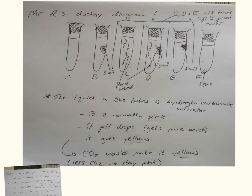But if the pH drops and that means it's getting more acidic, it turns yellow. Now CO2 when it dissolves in stuff it makes it acidic. So basically if you're getting CO2 produced it's going to go yellow, if there's not CO2 it's going to be pink.